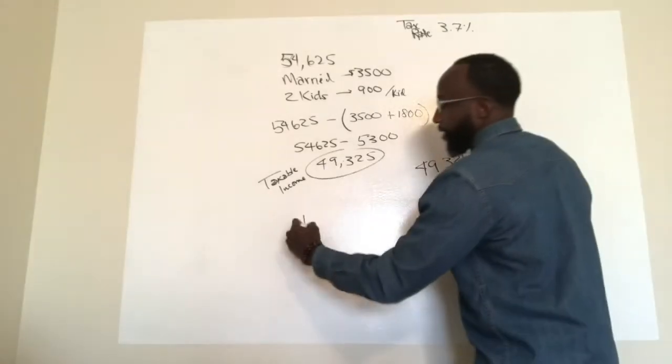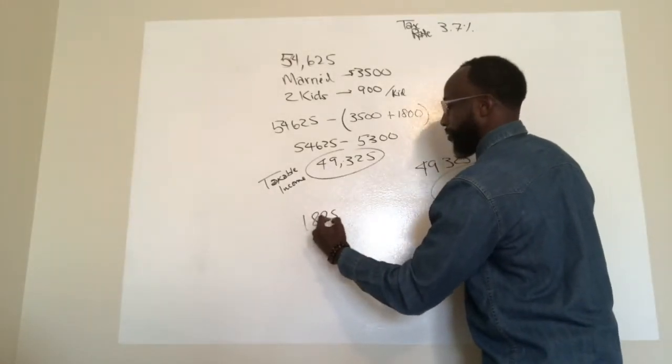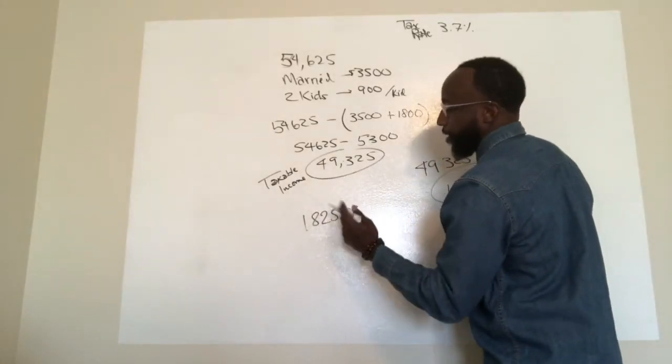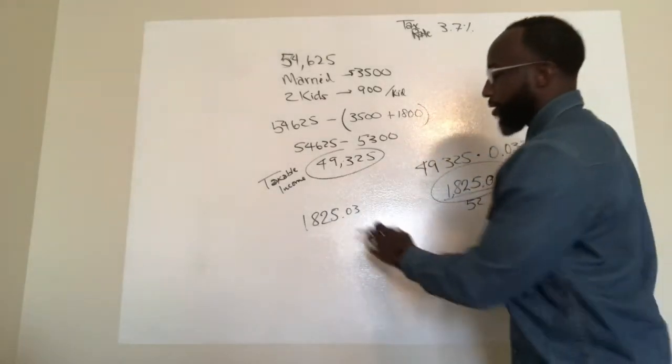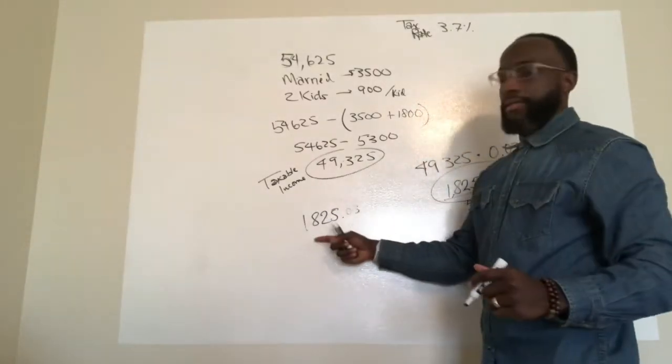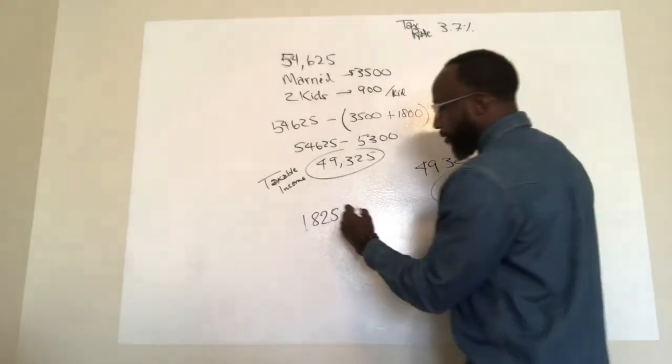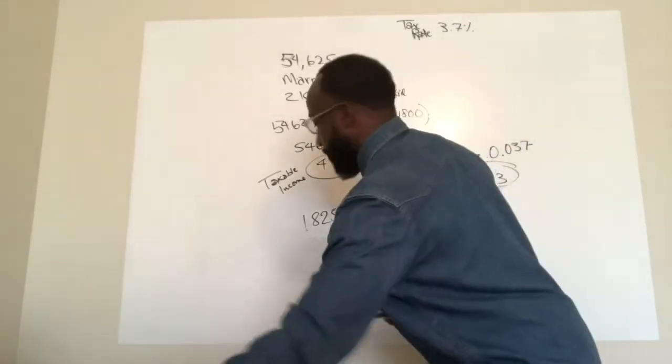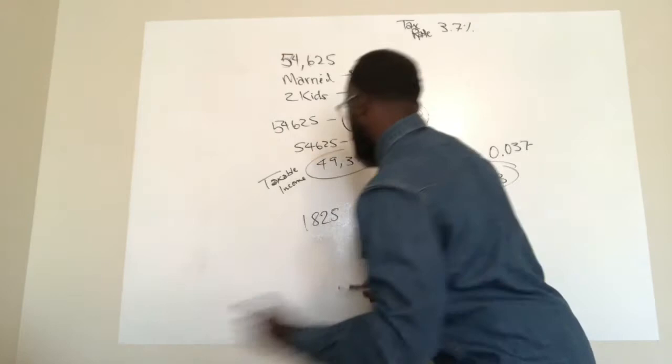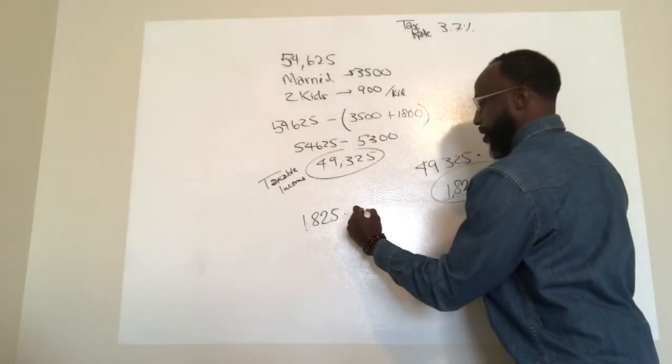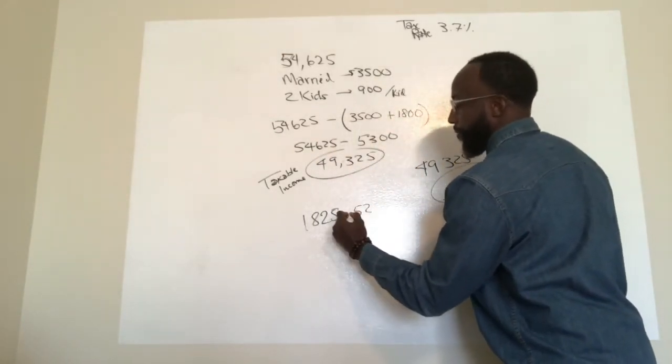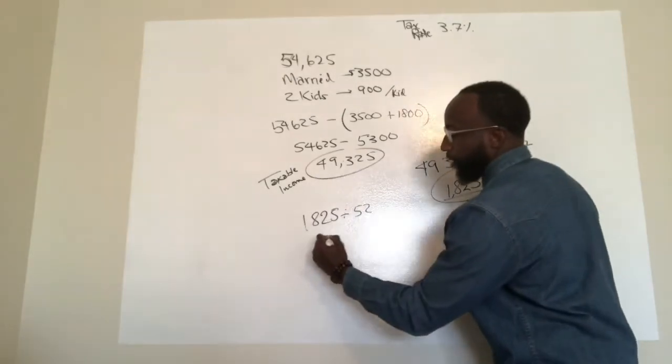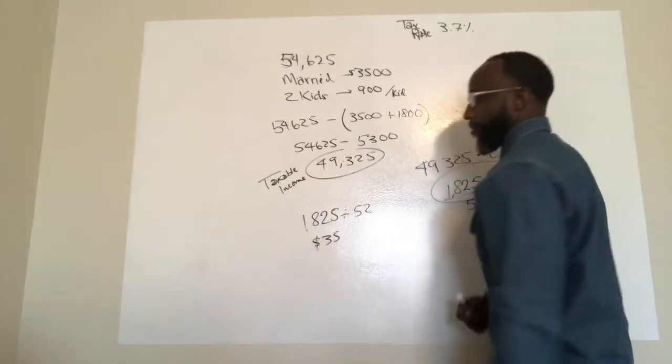When you divide this by the number of weeks, so it's 1,825, 3 cents. You really just run it to the nearest whole dollar, so it'd be just 1825 times, let me erase this, 1825 times, 50, divided by, I'm sorry, divided by 52. That's going to get you around $35.